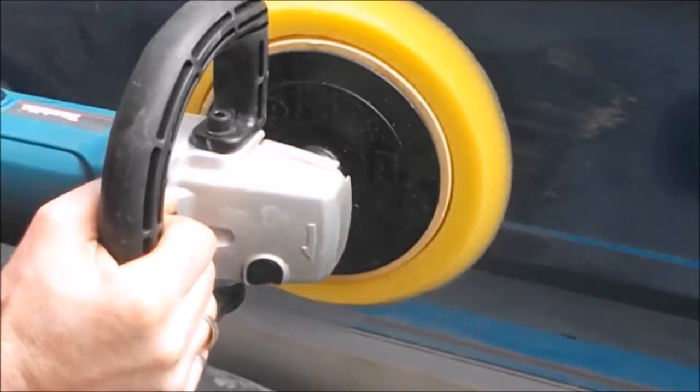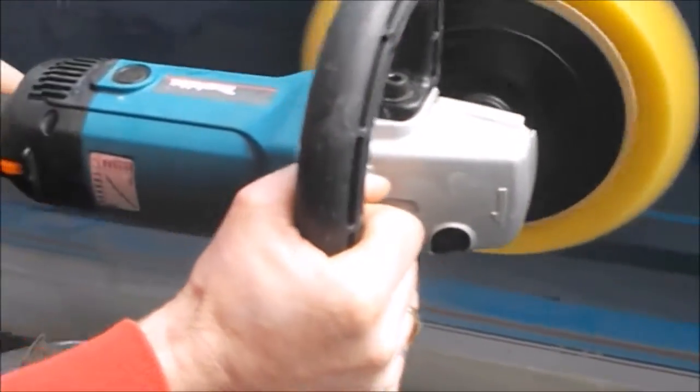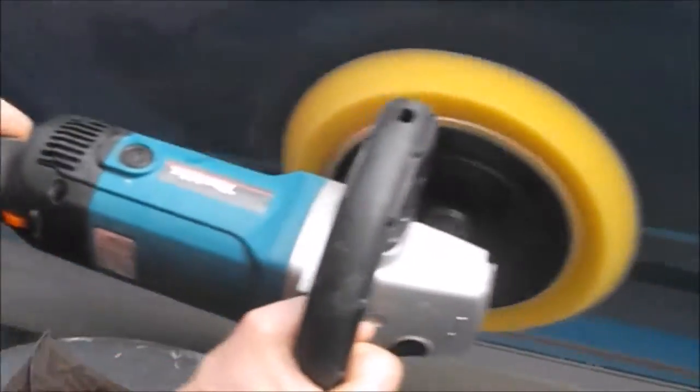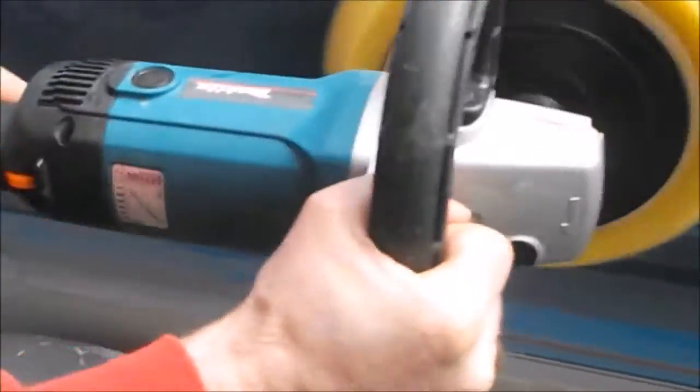Instead of just coming up and hitting it with the trigger, I'll kind of push the product into the sponge and then move it around a bit. It just prevents wasting a lot of the product when you hit the trigger the first time. I'll just move the grinder back and forth.